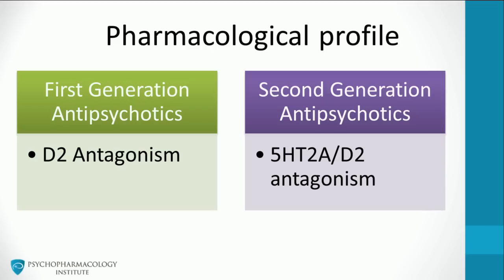Second generation antipsychotics also block D2 receptors, but what makes them different from first generation agents is their ability to block 5-HT2A receptors. As noted previously, these drugs are also known as serotonin-dopamine antagonists. In fact, they have higher affinity for 5-HT2A receptors than for D2 receptors.